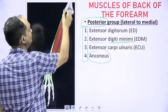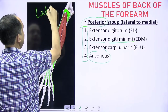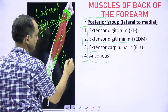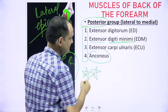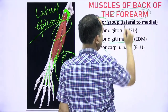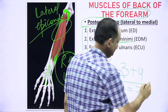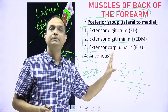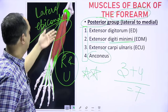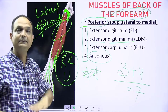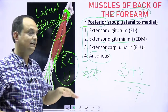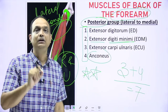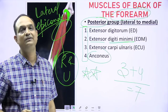All four muscles of the posterior group arise from the lateral epicondyle of the humerus. This is the important concept: having seen three lateral muscles plus four posterior muscles — seven muscles total — still no muscle is arising from the radius and ulna. These seven muscles are called superficial muscles precisely because they do not arise from the forearm bones.